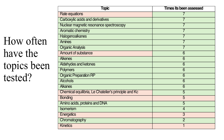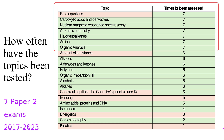There have been seven Paper 2 exams for A-Level Chemistry and there are a number of topics that have appeared on every single one. A good starting point for prioritising your revision would be these topics: rate equations from the Physical Chemistry topics, then carboxylic acids and their derivatives, NMR, aromatic chemistry, halogenoalkanes, amines, and organic analysis. They've come up every single time.